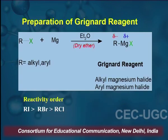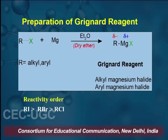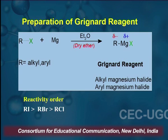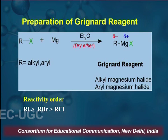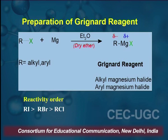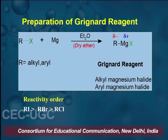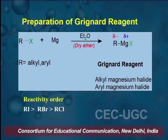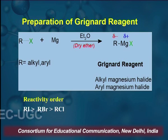Now the preparation of Grignard Reagent — we will discuss this in detail. Grignard Reagent is prepared by reacting a haloalkane or aryl halide with magnesium in dry ether, resulting in the formation of Grignard Reagent RMgX. These are referred to as alkyl magnesium halide and aryl magnesium halide. If X is chlorine, bromine, or iodine, the alkyl magnesium halide will be termed alkyl magnesium chloride, bromide, or iodide accordingly.